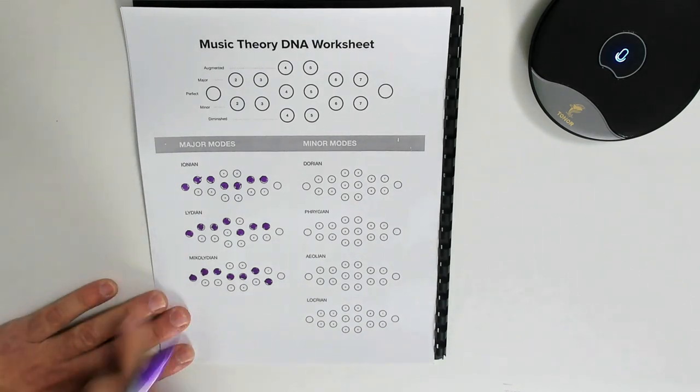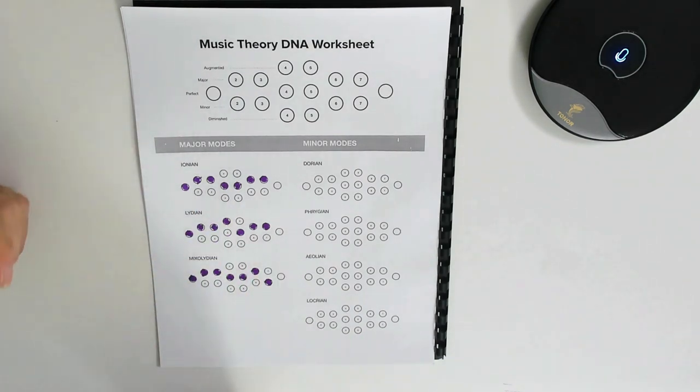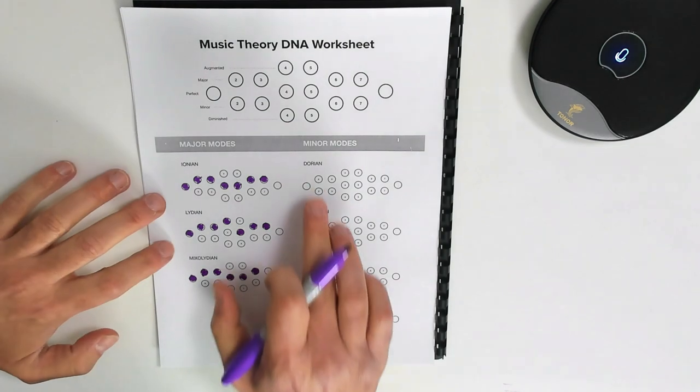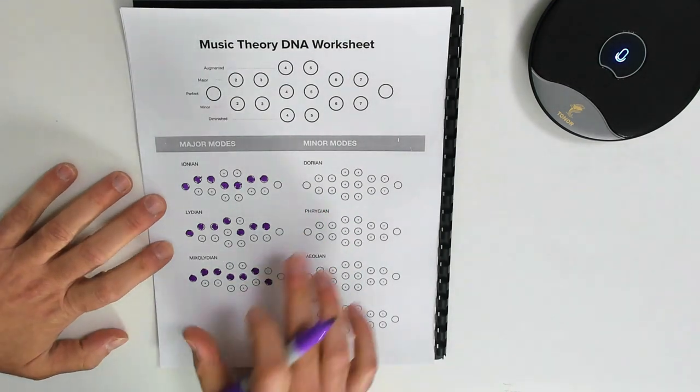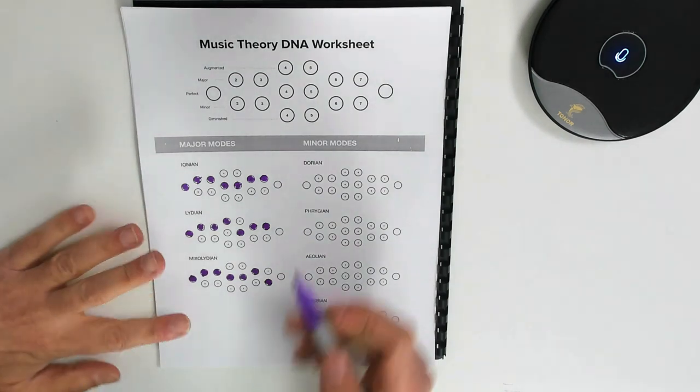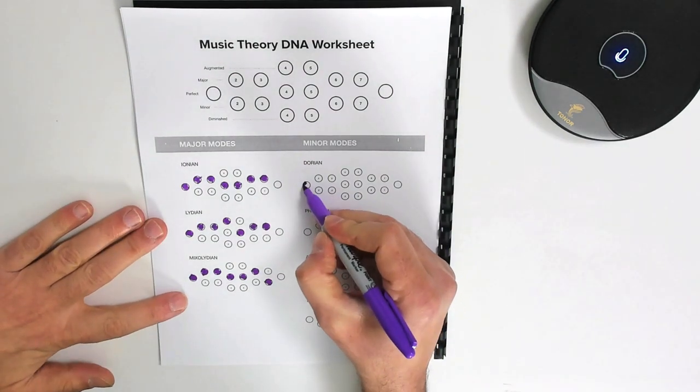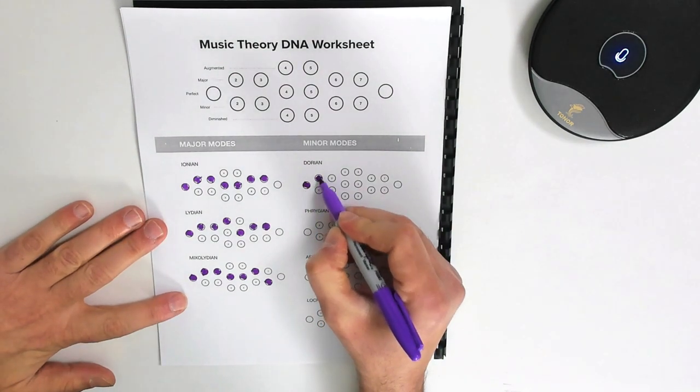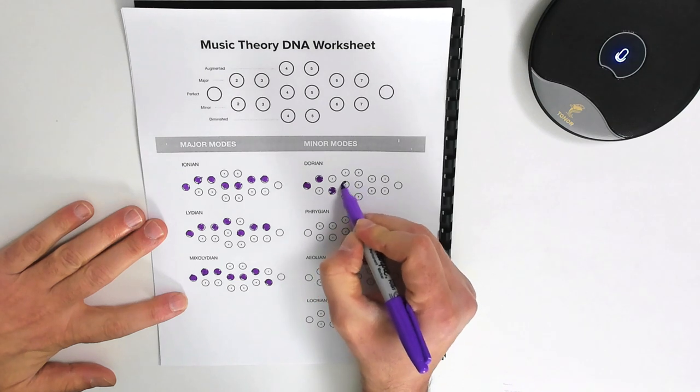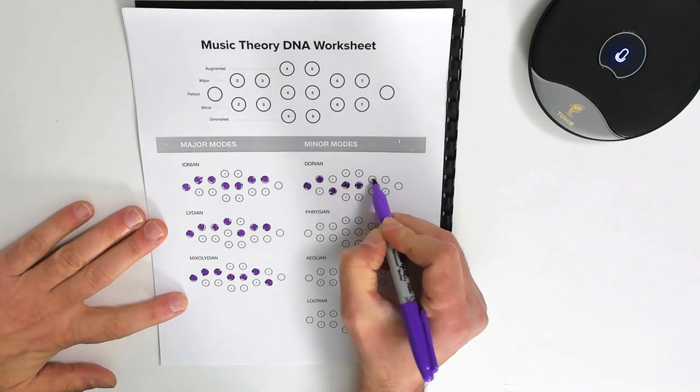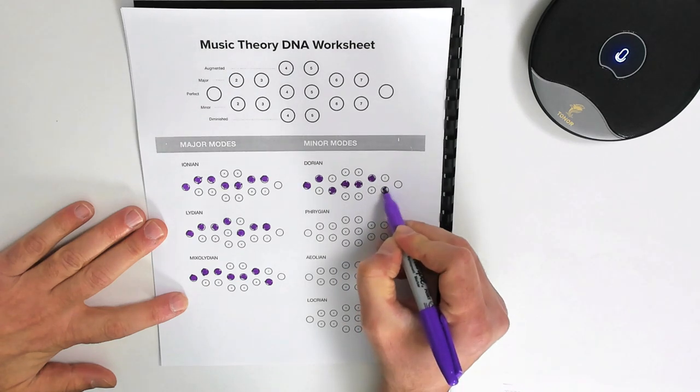Okay, let's move on to this one right here, this column. I'll explain to you after why these columns. Dorian is made of a one, a major second, a minor third, a perfect fourth, perfect fifth, major sixth, minor seventh.